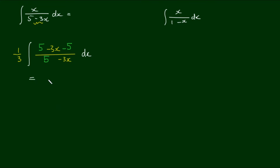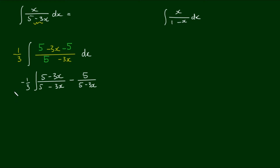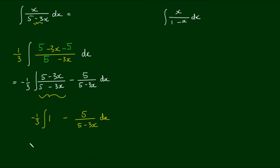So now I can further separate the integrand, and write this as 5 minus 3x over 5 minus 3x minus 5 over 5 minus 3x. Now the first term here further reduces to 1. We leave the second term, 5 over 5 minus 3x. So we have two separate integrals.